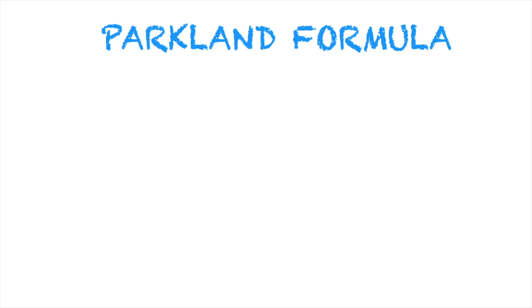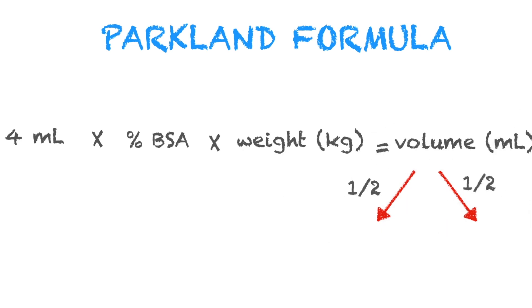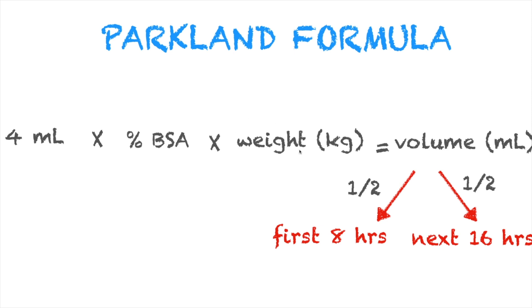So the Parkland formula. The standard Parkland formula is: 4 mL times the total body surface area percentage times the weight in kilograms. If the weight is in pounds, don't forget to convert it into kilograms. The result will be the total IV fluids to be given in the next 24 hours. We will be using the Rule of Nines to determine the body surface area percentage, then multiply by weight in kilograms to get the total volume to infuse over 24 hours.